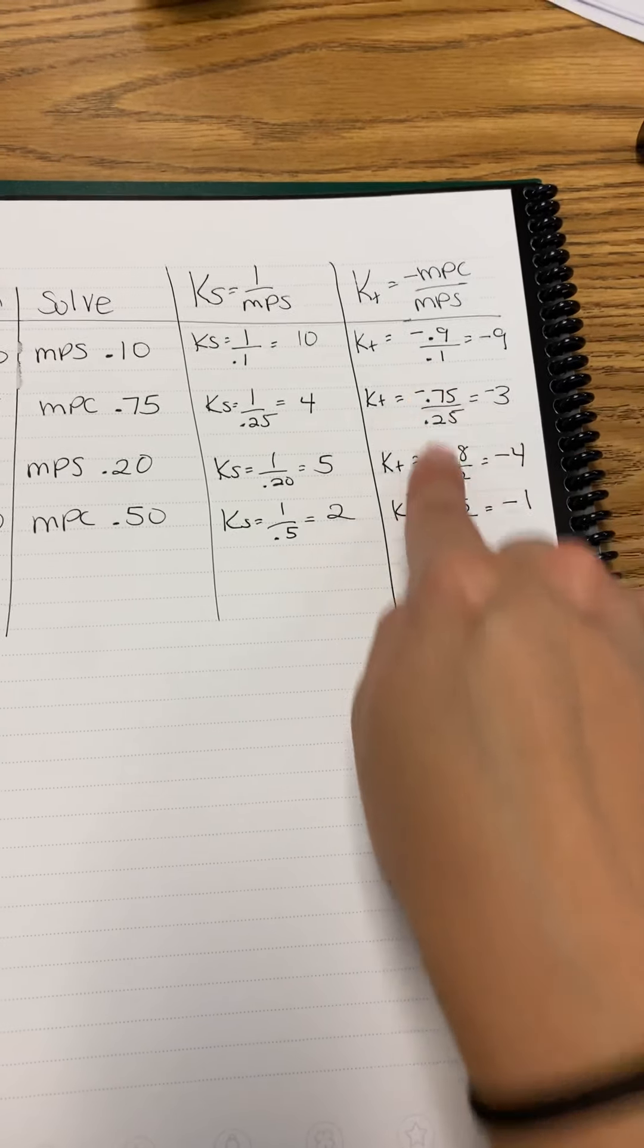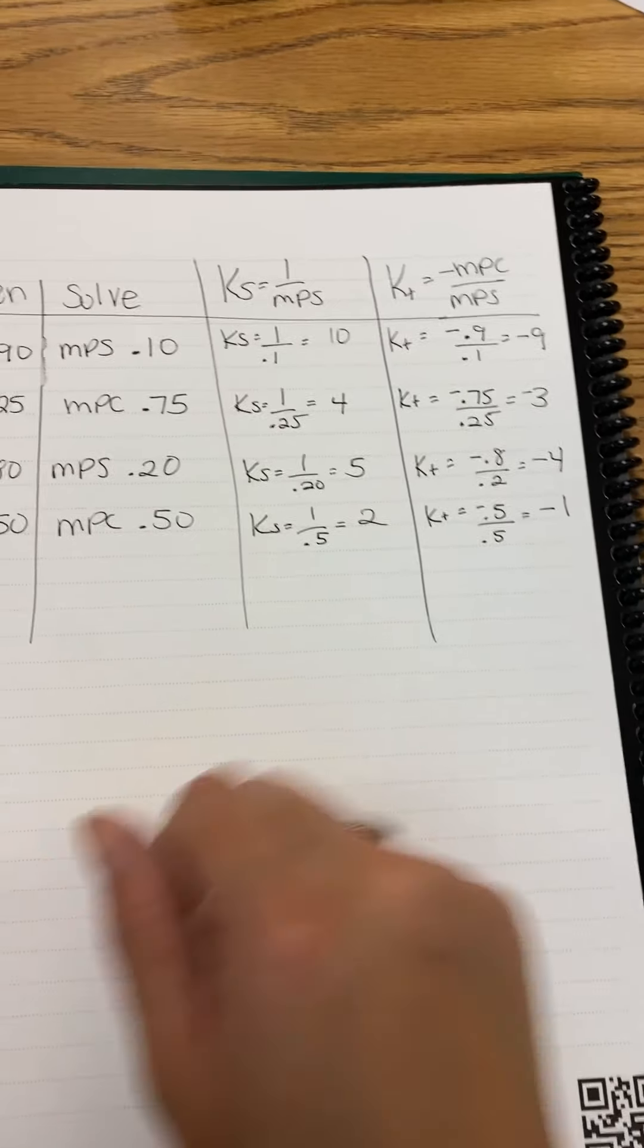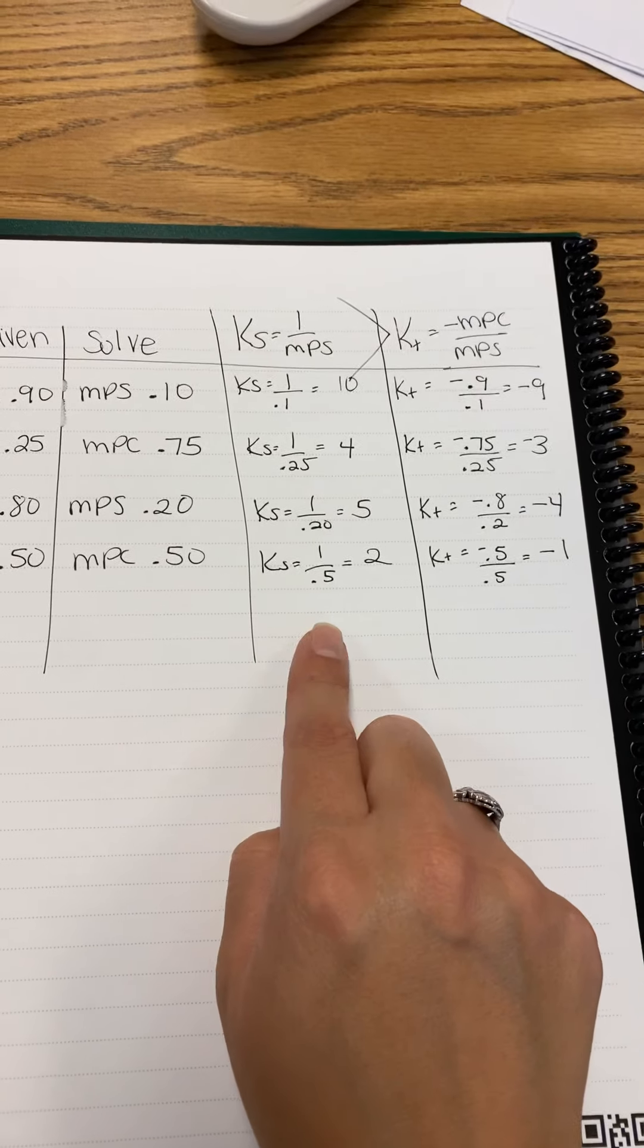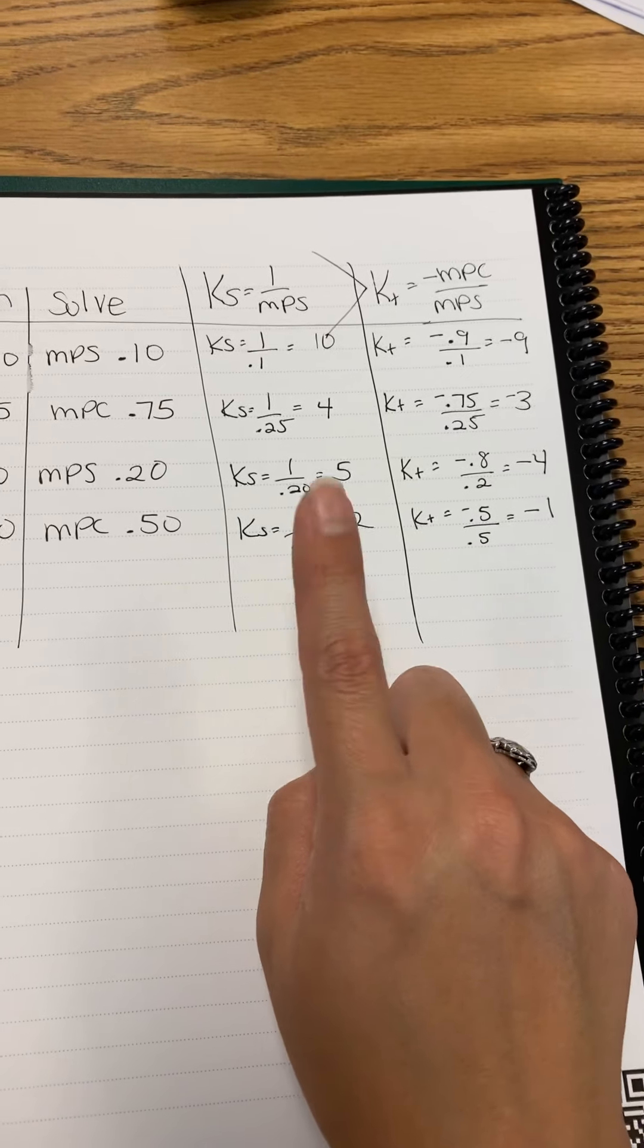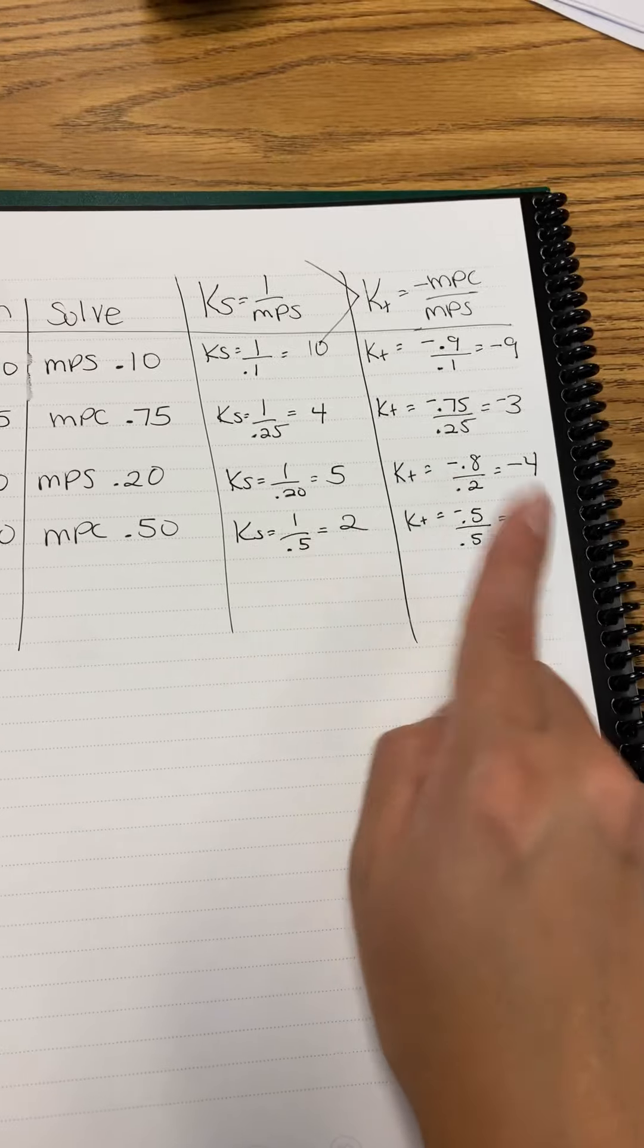The KT is always 1 less and negative compared to KS. Remember, KS is always greater than KT. That's why spending has a bigger effect on GDP than taxes do. Because KS is always 1 larger and positive. KT is 1 less and negative.